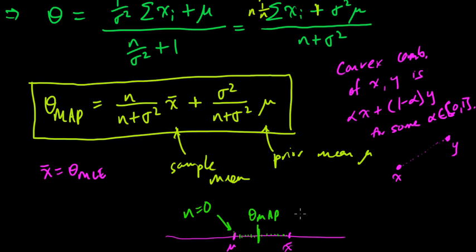And as n goes to infinity, if n is very large, then this goes to 0, and this goes to 1. So as n goes to infinity, we're approaching the sample mean, which is the MLE.